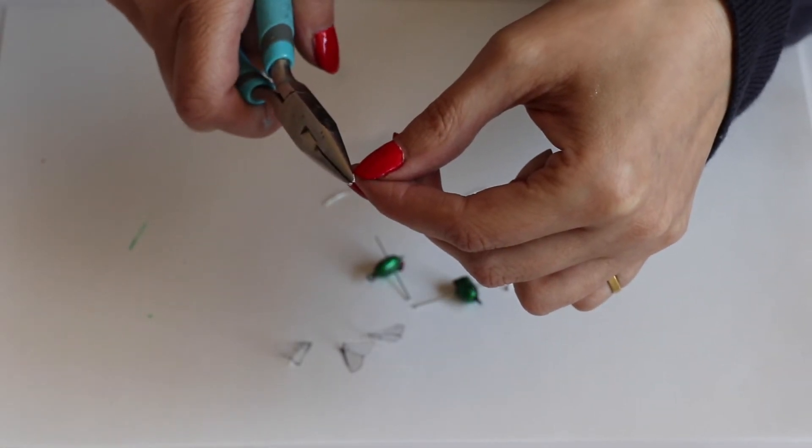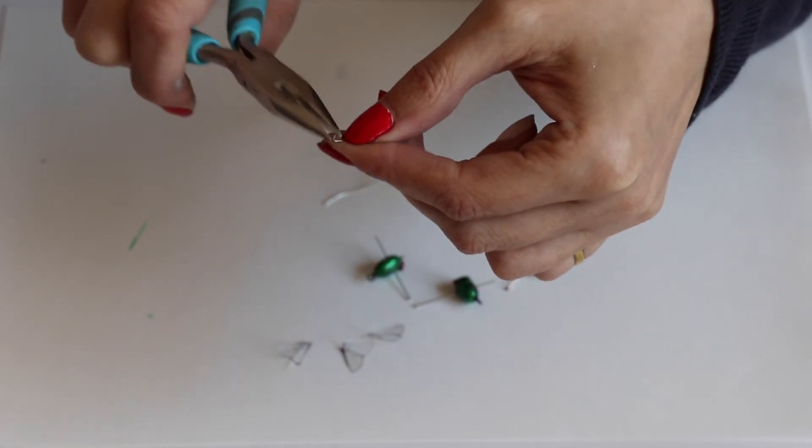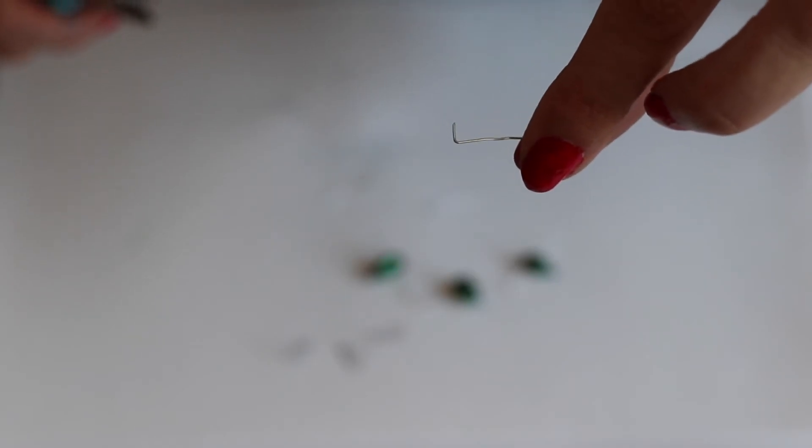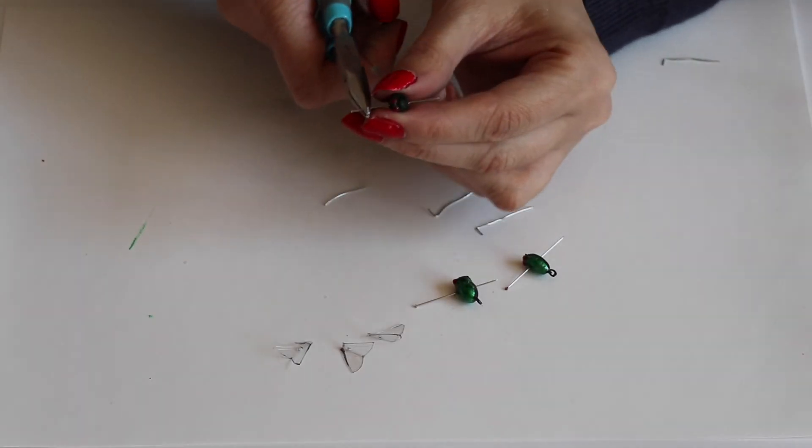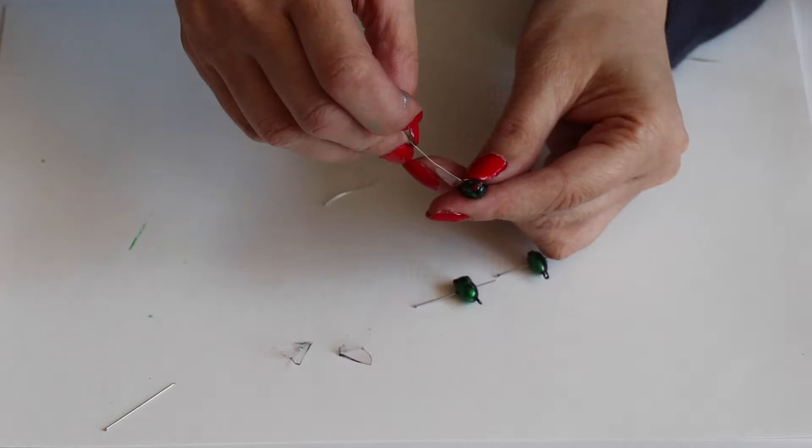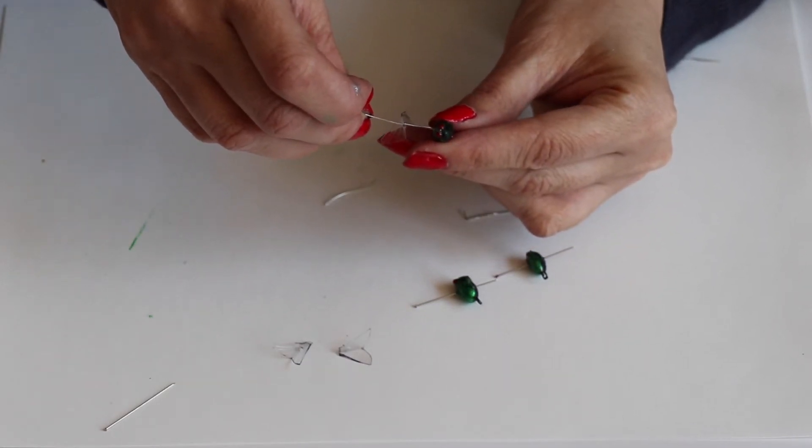To add wings to the tail mounted flies, bend a piece of wire a quarter inch. Now pull the pin out with a pair of pliers. Thread a pair of wings onto the wire and push the wire through the pinhole.